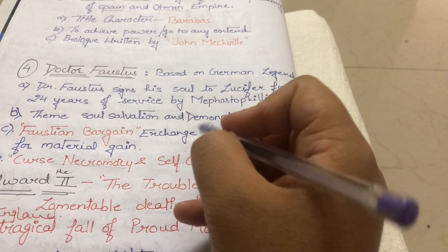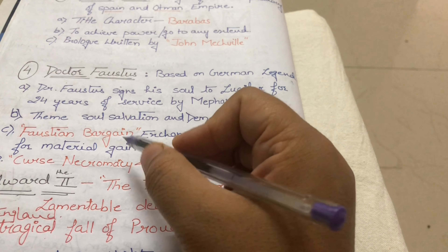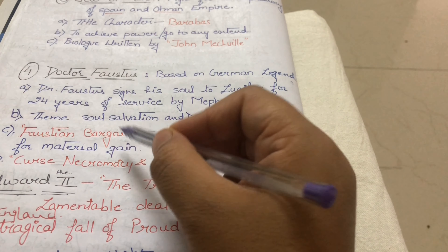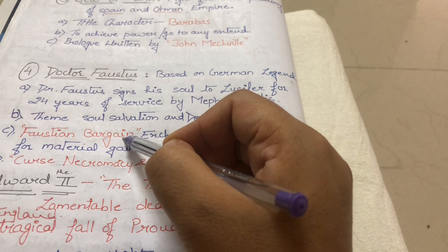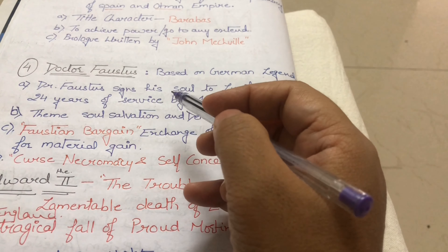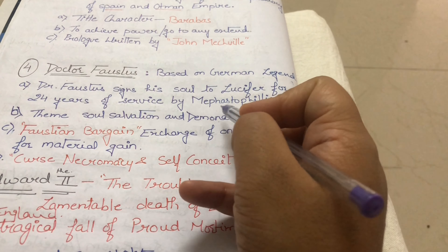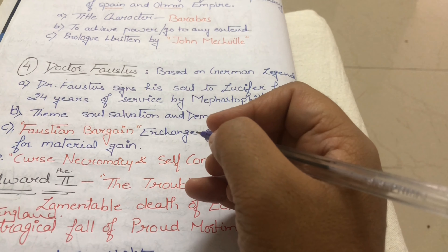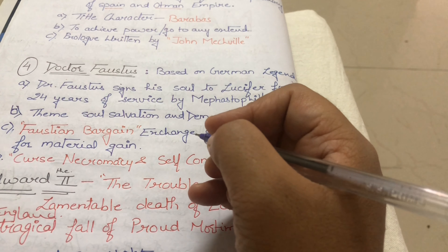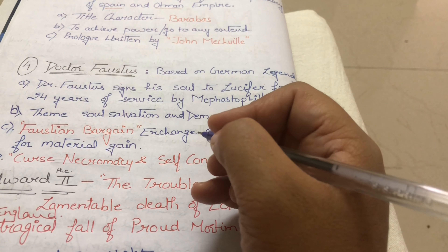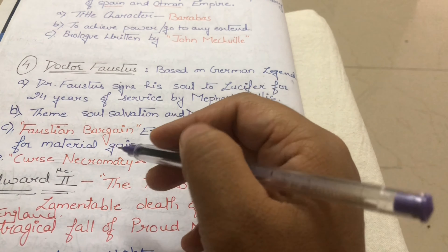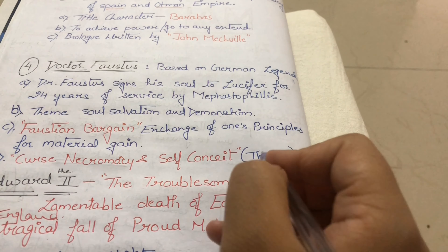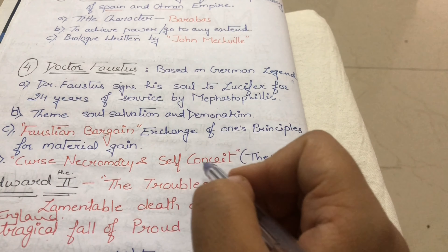A very famous concept from this play is the Faustian bargain, meaning the exchange of one's principles for material gain. In the play, Faustus bargains his soul for Mephistopheles' services. So Faustian bargain means giving up your principles, opinions, and views to others for material gain. Additional themes include curse, necromancy, and self-conceit.